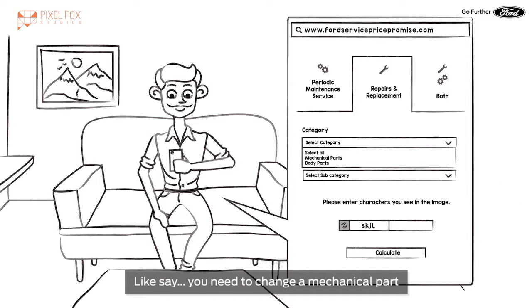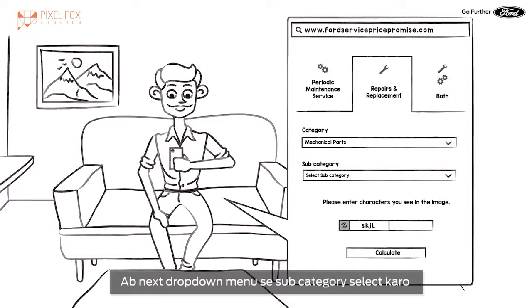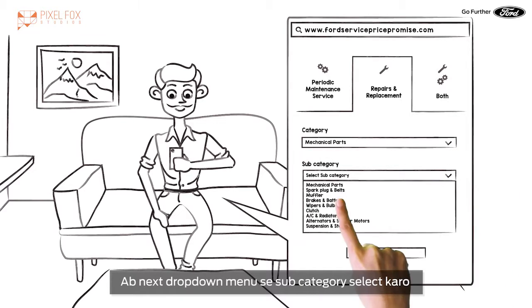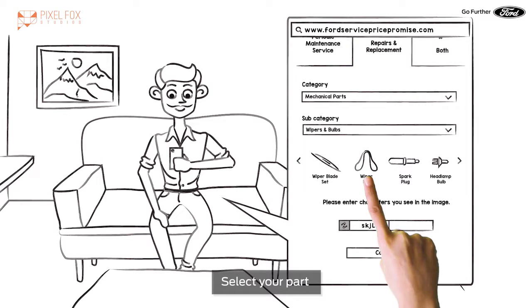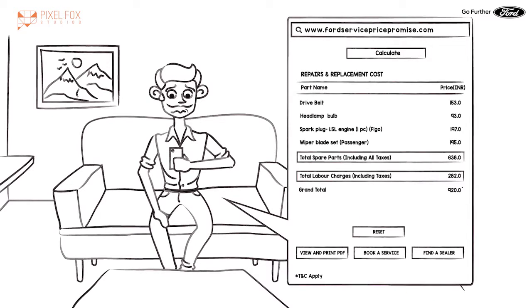Like say you need to change your mechanical part. Ab next drop down menu se sub category select karo. Aur saare parts ki list will appear below it. Select your part and click calculate. Chill man, this cost is all inclusive. Labor too.